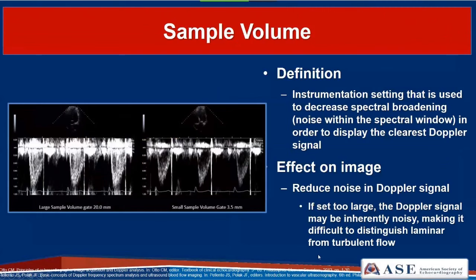The sample volume size is important when using pulsed wave Doppler. With laminar flow you should see a nice spectral window and envelope—each white speck representing a velocity moving at nearly the same speed, creating that clear spectral window. When you open up the gate to a wider range, you introduce a wider range of velocities and lose that spectral window. The problem is you can make laminar flow look like it's turbulent. If the sample volume is too large, the Doppler signal will look noisy with spectral broadening, making it difficult to discern laminar flow from turbulent flow.